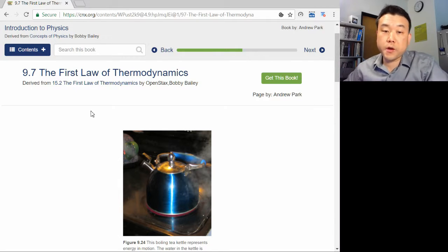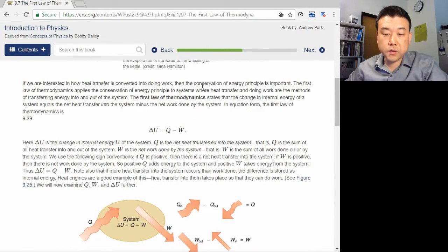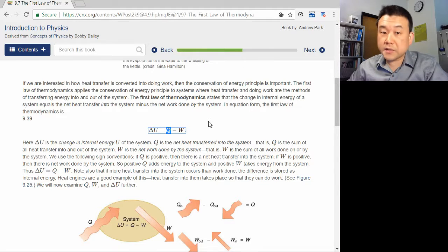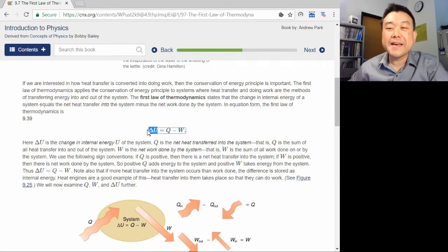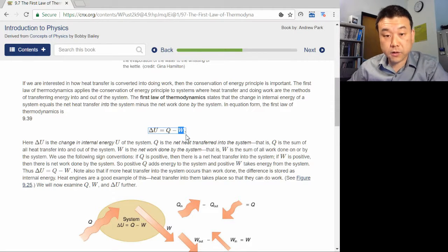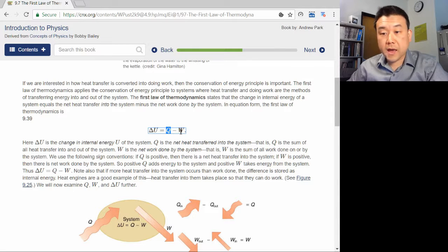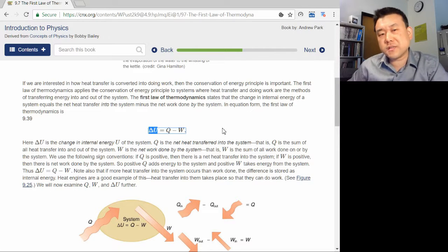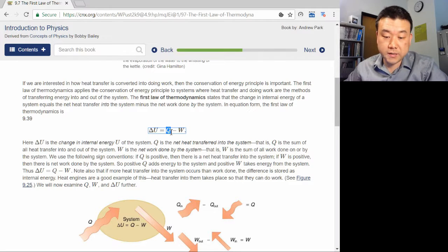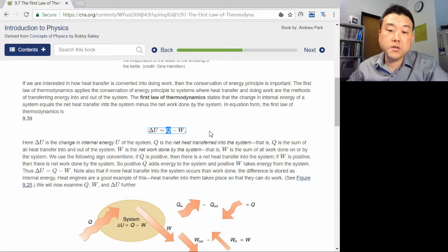The first law of thermodynamics is a restatement of conservation of energy, with thermal energy, heat transfer, explicitly included. The change in internal energy, whatever that means, is equal to the change due to two different ways of transferring energy: mechanical work and heat transfer. Any increase or decrease in internal energy of a system, which is what we sometimes sloppily call thermal energy, is accounted for in the energy flow into the system, Q net, and in the energy flow out of the system, net work done by the system.